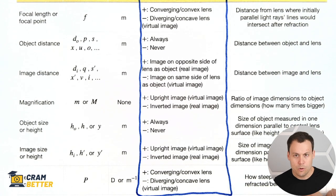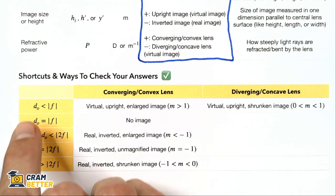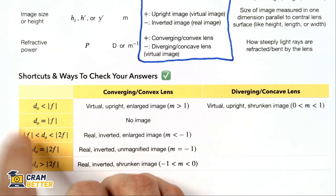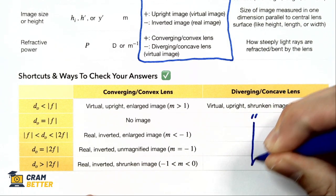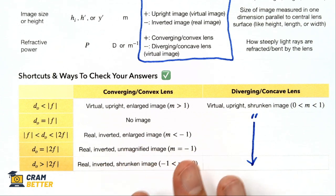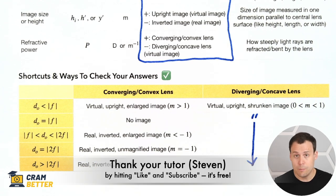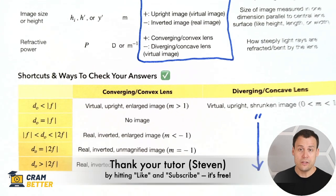The last thing on this cheat sheet that's really useful is a way to check your answers. By comparing your object distance against the focal length, you can make predictions about what types of images will be created — these are for the converging lens. Diverging lenses always create the same type of image, so all those boxes are the same. These predictions let you check your answer after doing the math. Sometimes for a multiple choice question, if you have these memorized, you can get the answer instantly without doing any math at all.